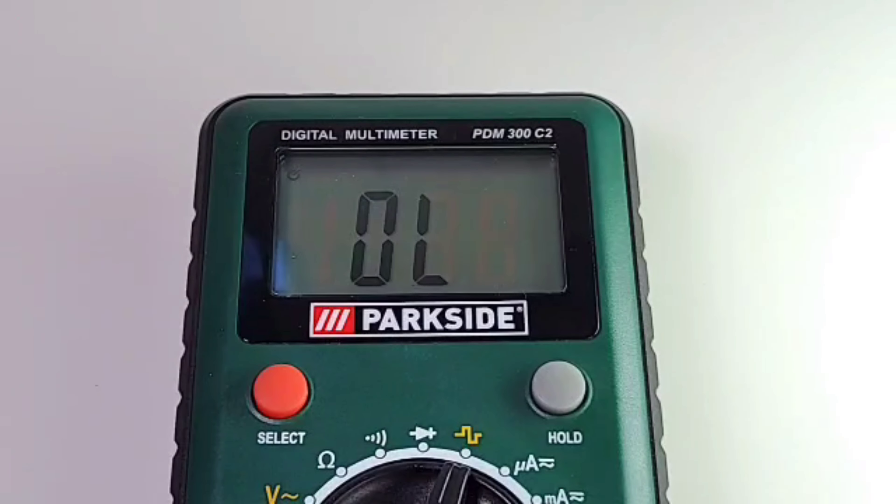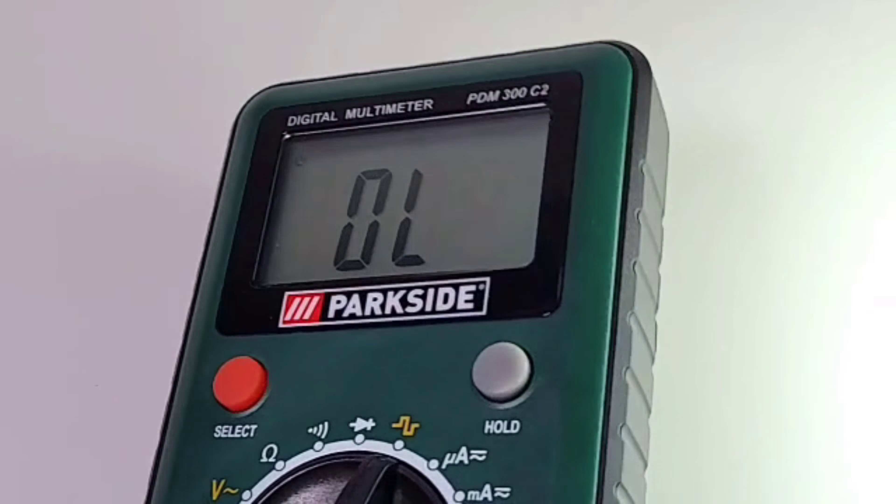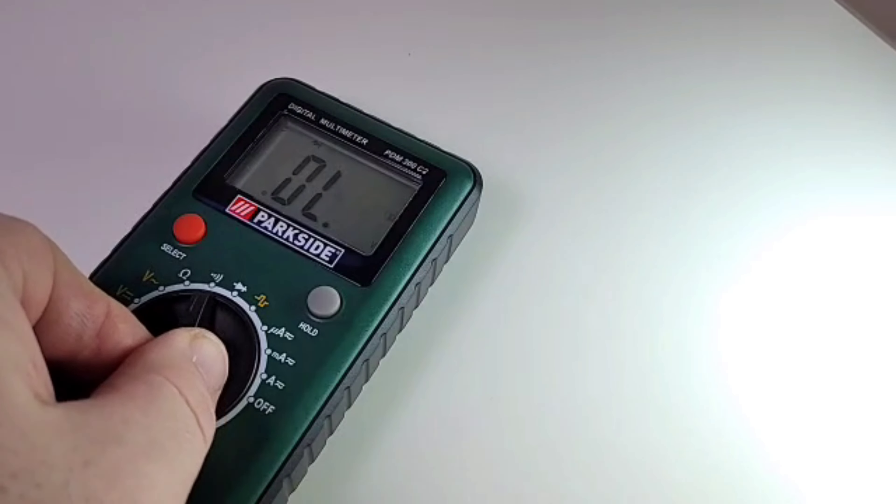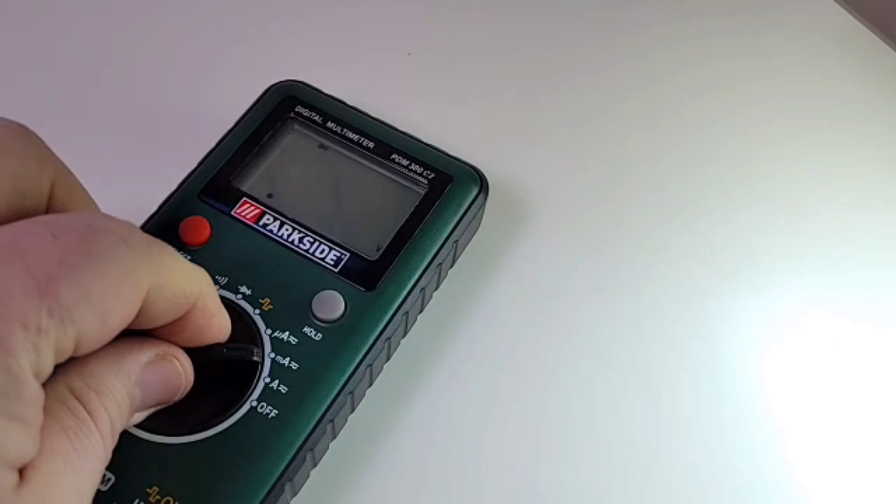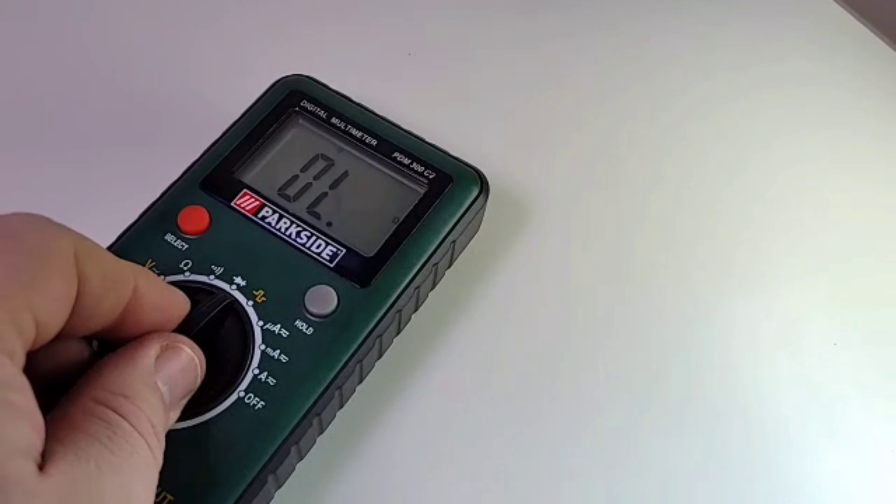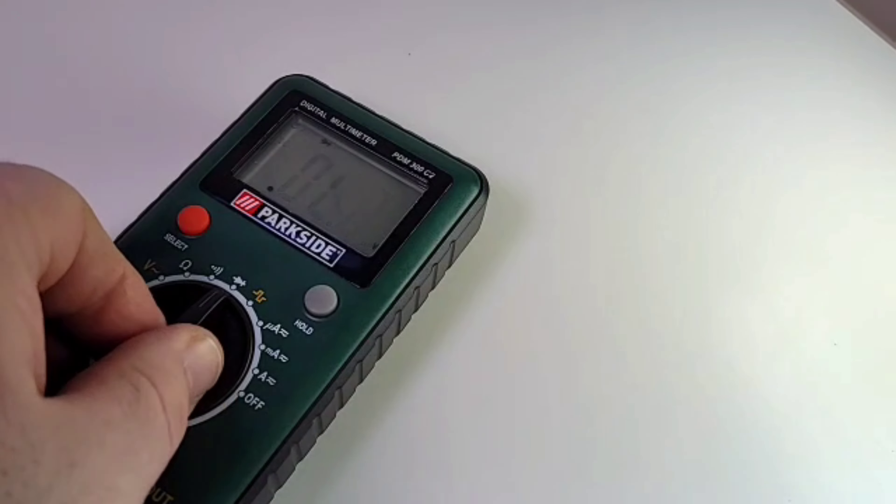When you turn the meter on you are greeted with that three and a half digit LCD display with a max indication of 1999, or 2000 counts. Measuring rate is approximately two to three measurements per second - not the fastest out there. It has a little bit of glare but digits are a good size. Backlight definitely would have been nice. When you switch ranges you have that beep going on, but you do hit that range with authority - got that nice clickety-clack.